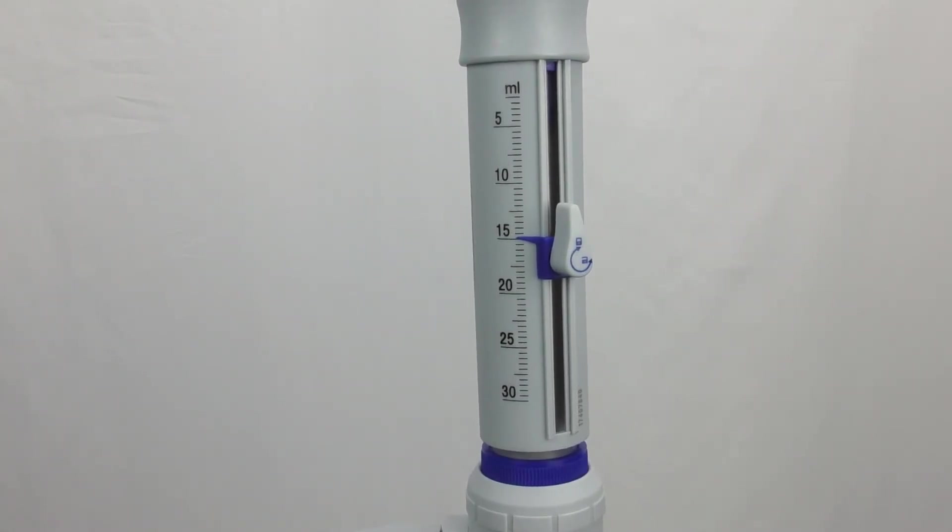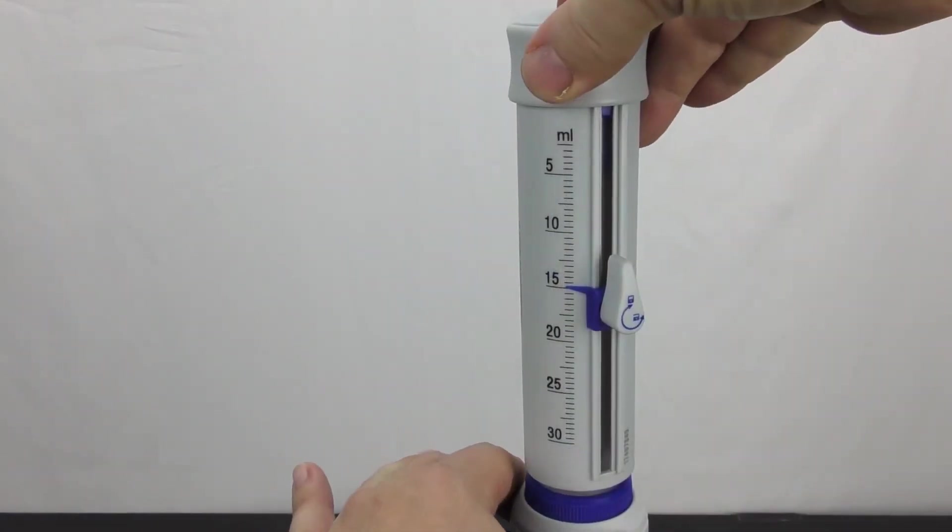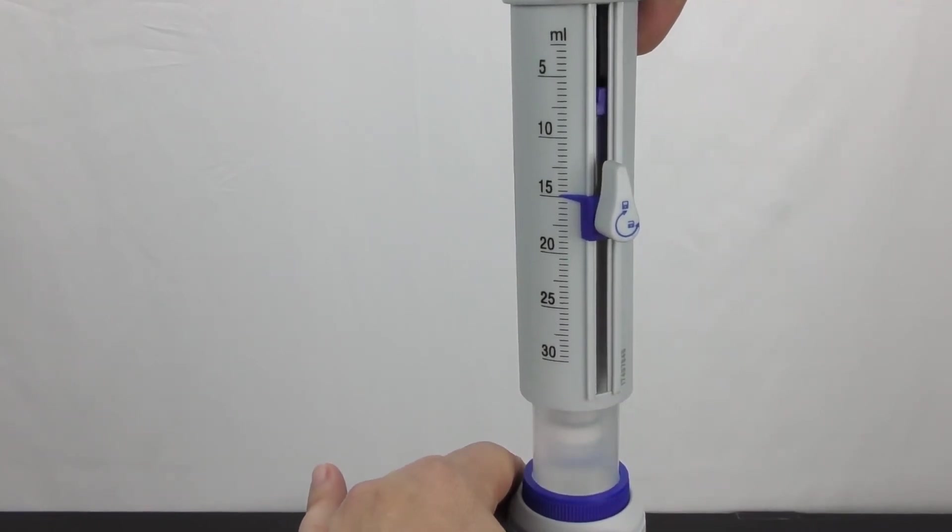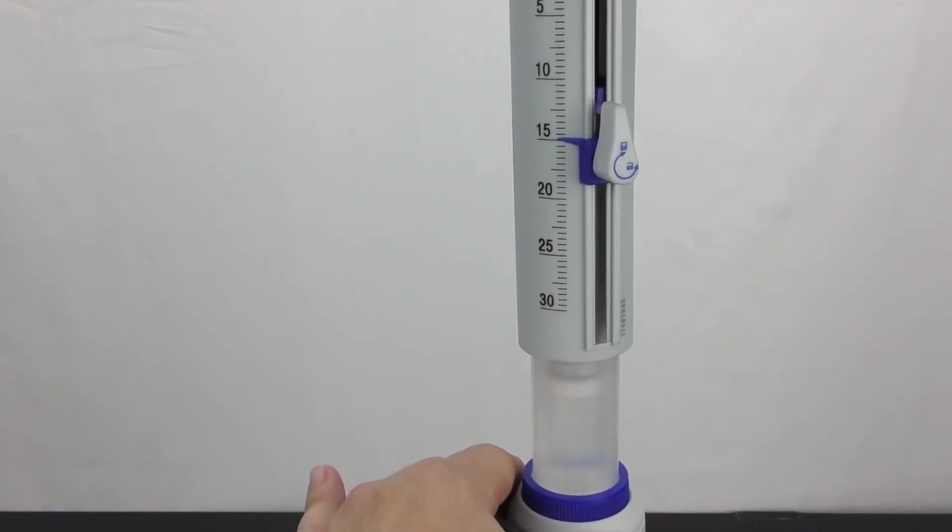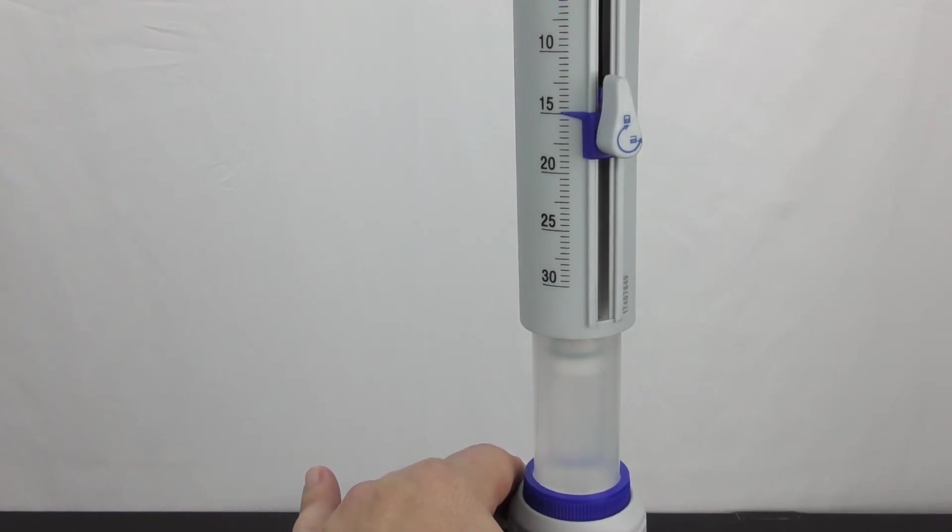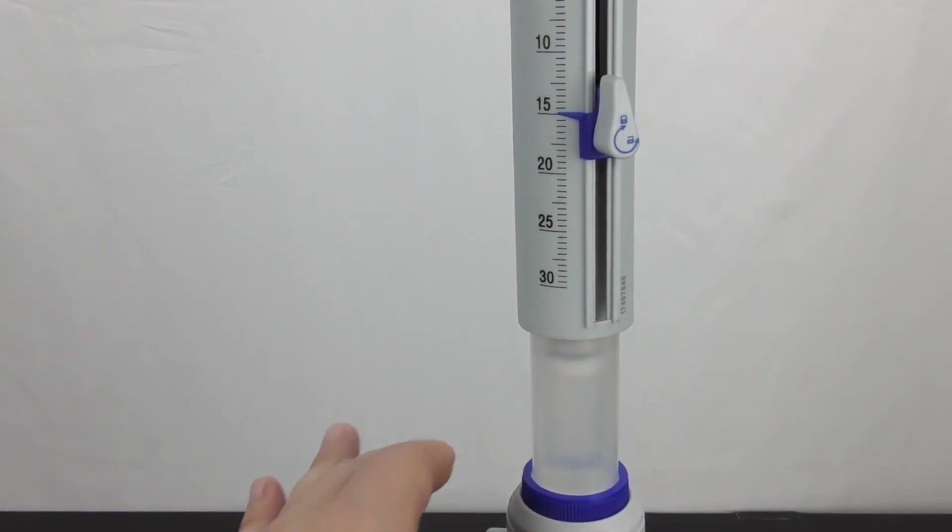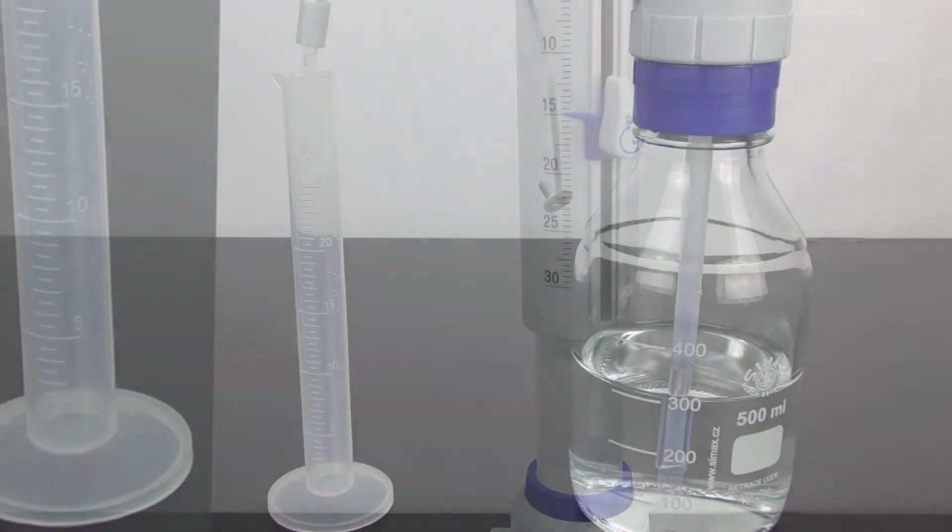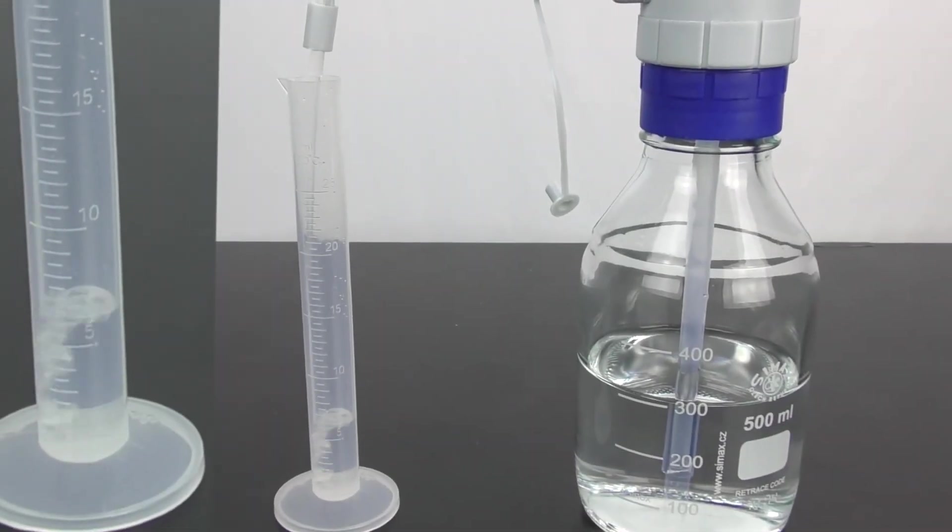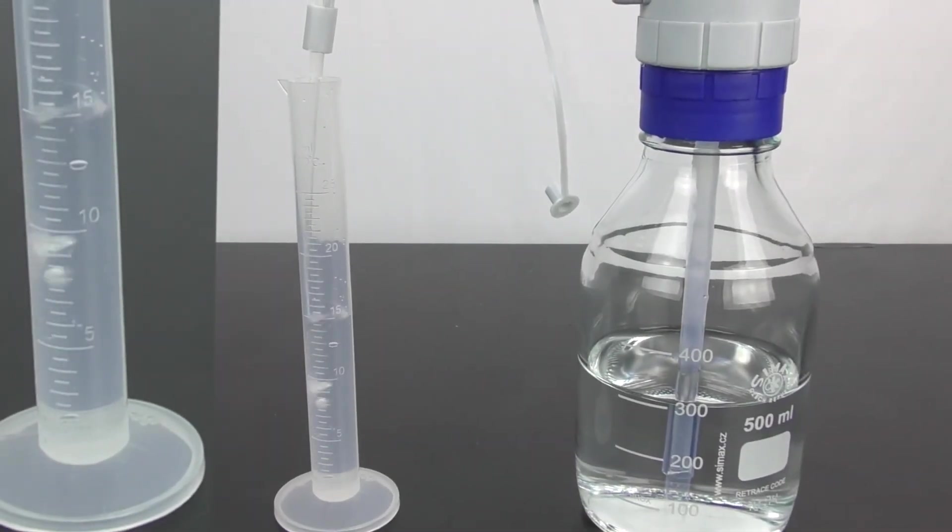I had this set at 15 milliliters, so I'm going to pull this up firmly but gently. When you feel resistance, you want to stop. That's the 15 milliliters that I've pulled into the dispenser. If I simply press down, I should be dispensing out exactly 15 milliliters of my solution.